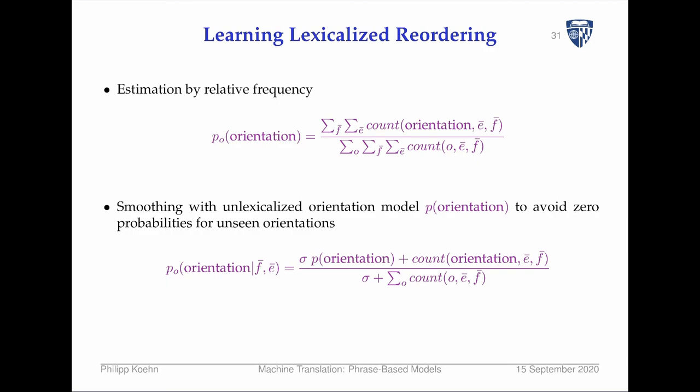Then we're back to the usual maximum likelihood estimation. One thing we do is smooth this a little bit — there might be phrase pairs that never occur in particular orientations, and singleton phrase pairs only occur in one orientation. So we also have a uniform distribution over orientations that we mix with the count-based MLE estimate.